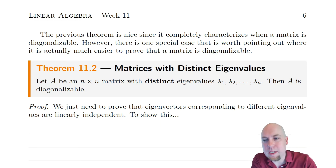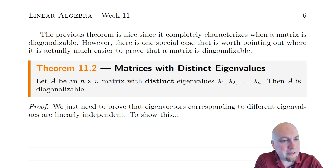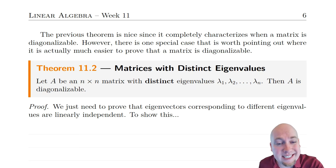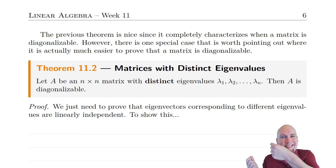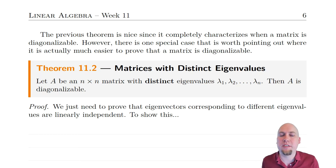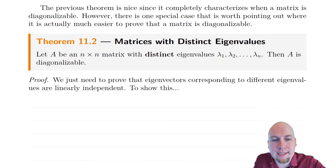So what is the theorem? Well, it says if you've got an n by n matrix and it's got n eigenvalues and those eigenvalues are distinct, then the matrix is diagonalizable. So if you can find n different eigenvalues of that matrix, it's got to be diagonalizable. Let's go through the proof and see where that comes from.